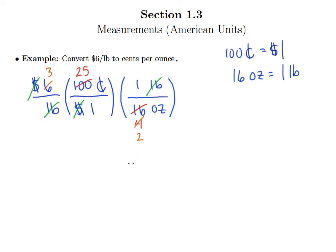On the top, we have 3 times 25, which is 75. On the bottom, 1 times 2 is 2. So that's 75 cents per 2 ounces.